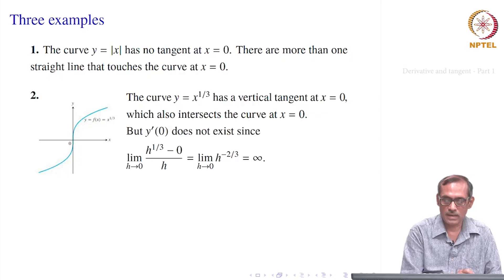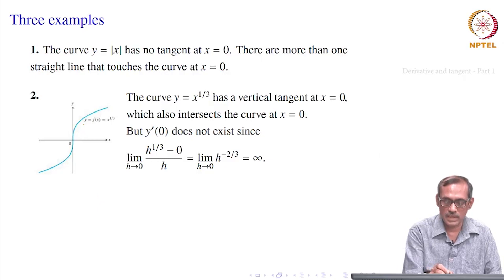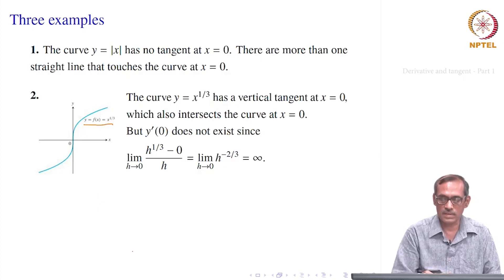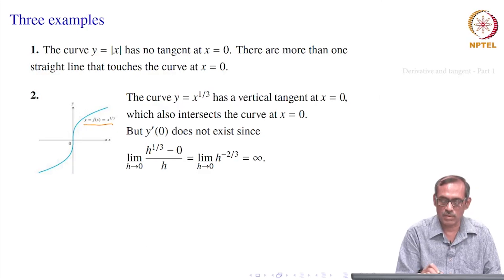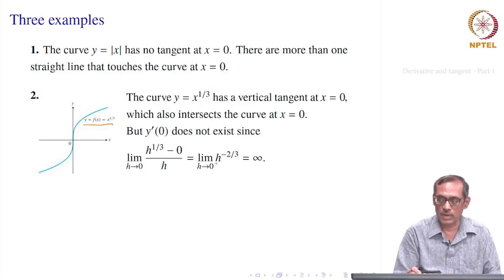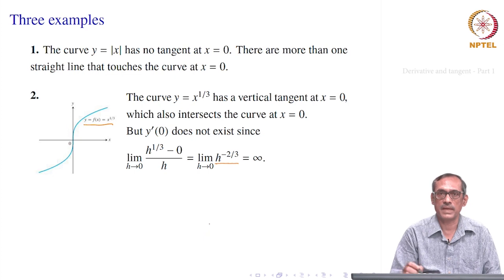There is something else that happens here. If you take the derivative of y = x^(1/3), it does not exist at 0. The derivative limit is [f(0 + h) − f(0)] / h = h^(1/3) / h = h^(−2/3), whose limit does not exist — in fact it equals infinity; it blows up. From h → 0+ or h → 0−, it is still squared, so it gives infinity again.